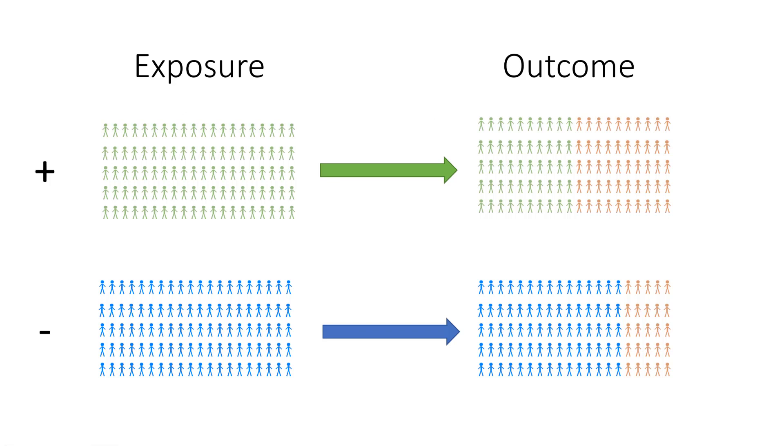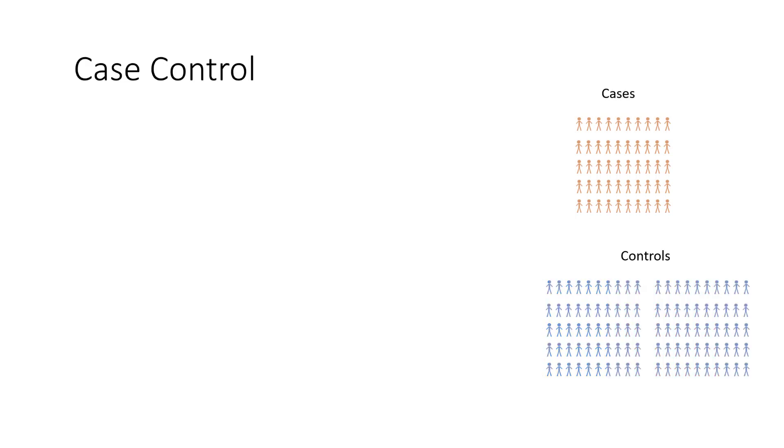In cohort studies, this can be done prospectively or retrospectively. Case control studies are different. In case control studies, we start with a group of cases and match them to a group of controls.